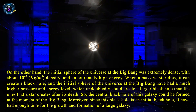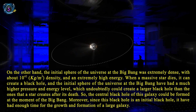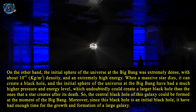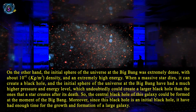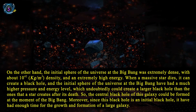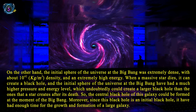On the other hand, the initial sphere of the universe at the Big Bang was extremely dense, with about 10 to the power of 42 kg. When a massive star dies, it can create a black hole. The initial sphere of the universe at the Big Bang had a much higher pressure and energy level, which undoubtedly could create a larger black hole than those that a star creates after its death. So, the central black hole of this galaxy could have formed at the moment of the Big Bang.